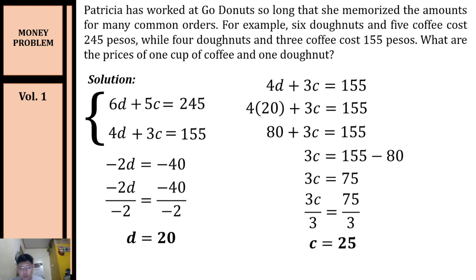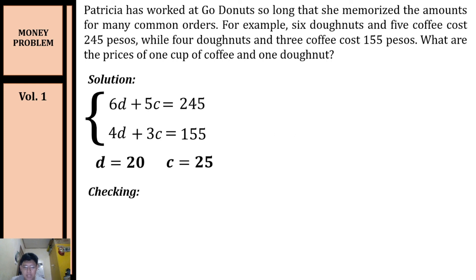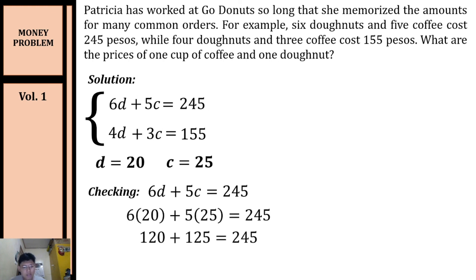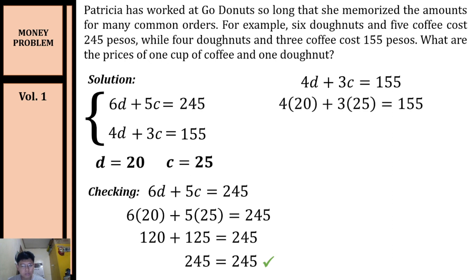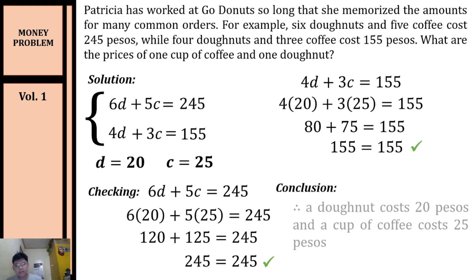Before concluding, let's check our solution by substituting d = 20 and c = 25 into both equations. First equation: 6(20) + 5(25) = 120 + 125 = 245 — yes, it satisfies. Second equation: 4(20) + 3(25) = 80 + 75 = 155 — yes, it satisfies. Therefore, a donut costs 20 pesos and a cup of coffee costs 25 pesos.